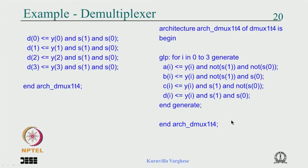Using a generate loop: label GLP for I in 0 to 3 generate — A(I) <= Y(I) and not S(1) and not S(0); B(I) <= Y(I) and not S(1) and S(0); C(I) <= Y(I) and S(1) and not S(0); D(I) <= Y(I) and S(1) and S(0); end generate. This is concise and elegant — defining the right internal signals makes the loop possible.